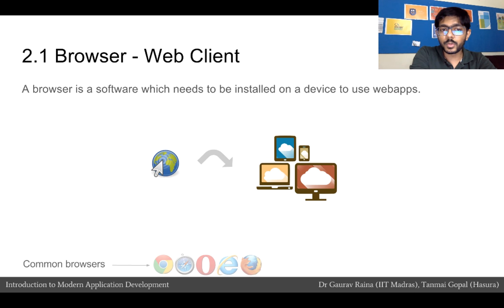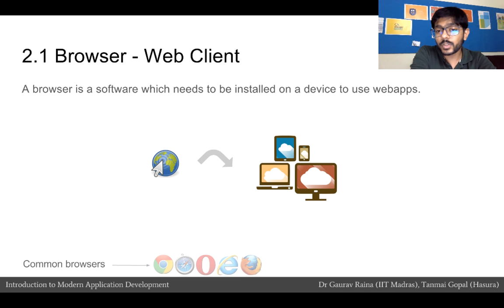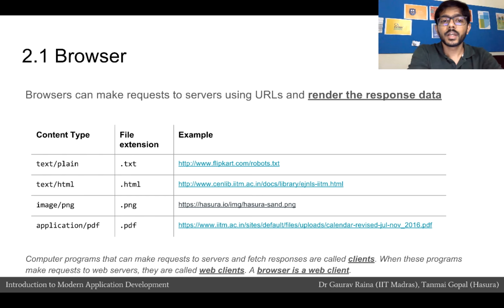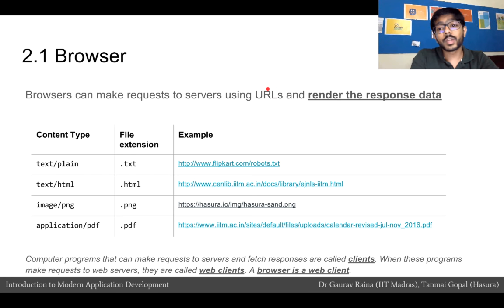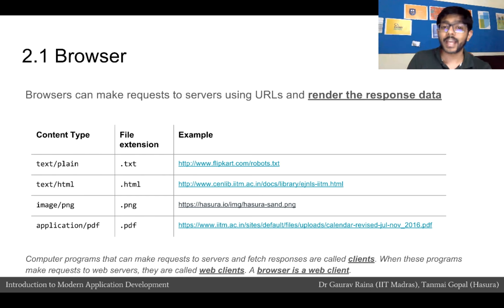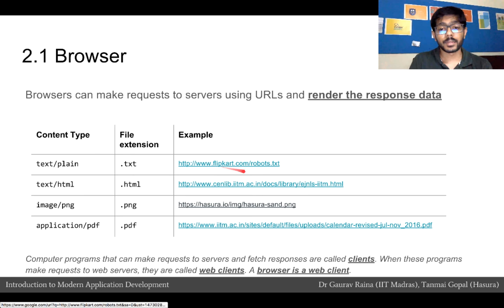The first thing we did is use something called a browser. A browser is software which we install on our devices — on computers or on mobile phones — and it helps us use web apps or websites. Some examples of browsers are Chrome, Safari, Internet Explorer, and Firefox. The main function of a browser is to make requests to a server using URLs or web addresses and to render the response data. For example, browsers can display textual data — flipkart.com/robots.txt would load up a text file.